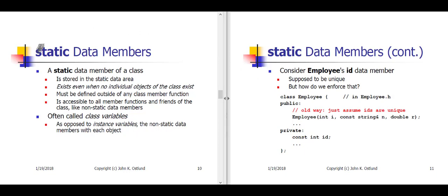A fourth use of static is to define static data members of a class. If you declare a data member in a class to be static, that means that data member is stored in the static data area. Importantly, this means that data member is going to exist even when there are no objects of the class currently existing in the program. The static data member is going to be accessible to any member functions and friends in the class, just like non-static data members are.